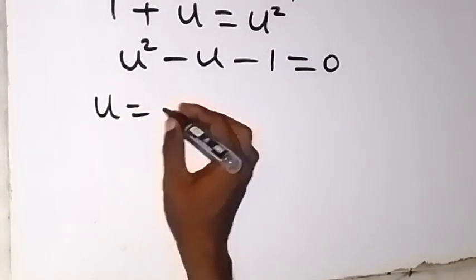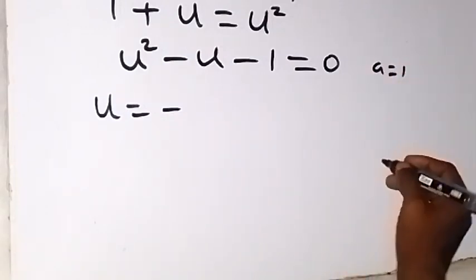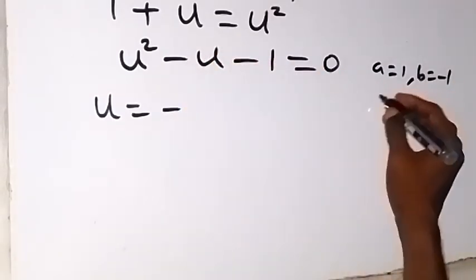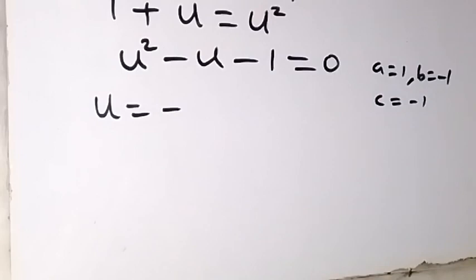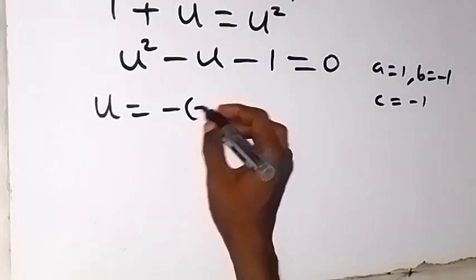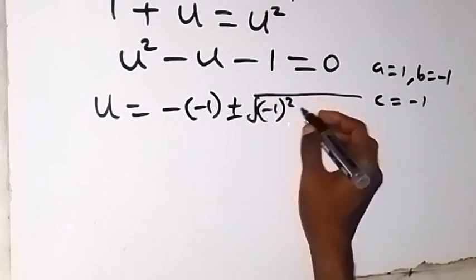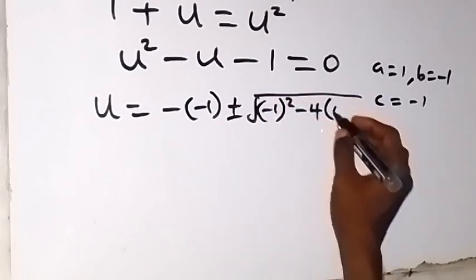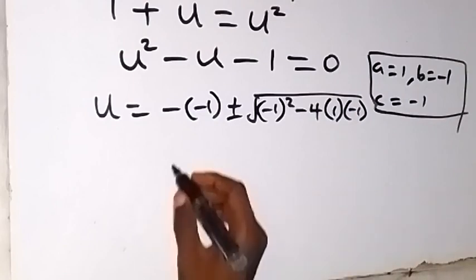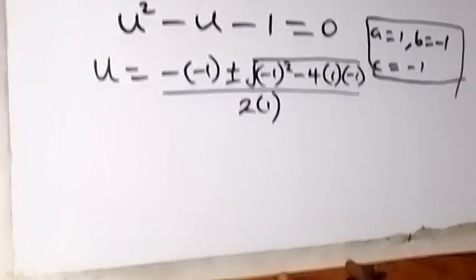We say u equals minus b plus or minus square root of b squared minus 4ac, all over 2a. Here our a is 1, b equals minus 1 (coefficient of u), and c equals minus 1 as well. Substituting: we have minus of minus 1, plus or minus square root of minus 1 squared minus 4 times 1 times minus 1, all over 2 times 1.